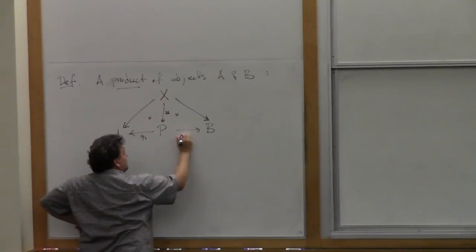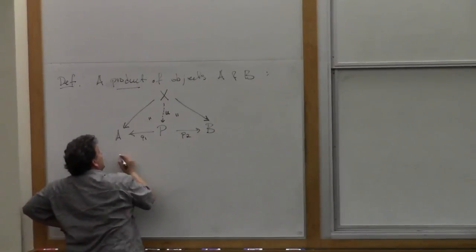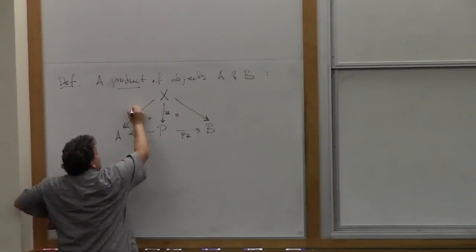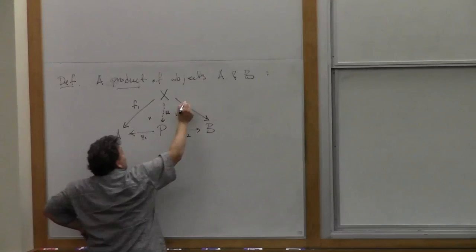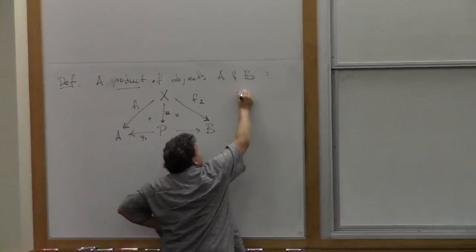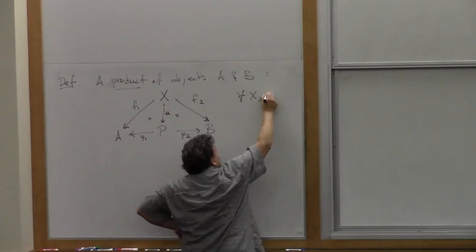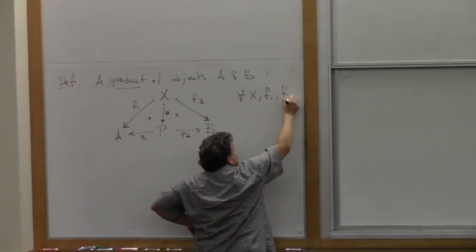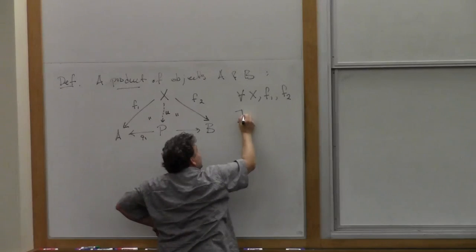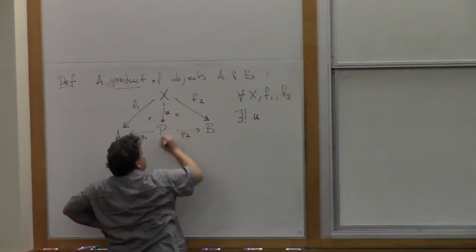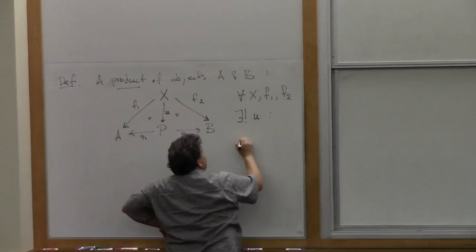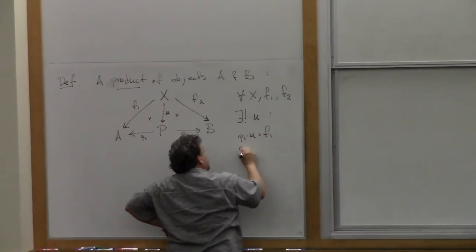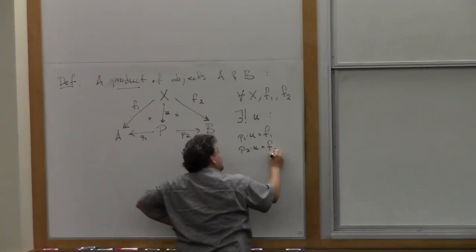I'll call the arrows P1 and P2. The idea is that this structure is a product just in case: given any X and F1 and F2 as indicated, there exists a unique map U such that P1 after U is F1 and P2 after U is F2.